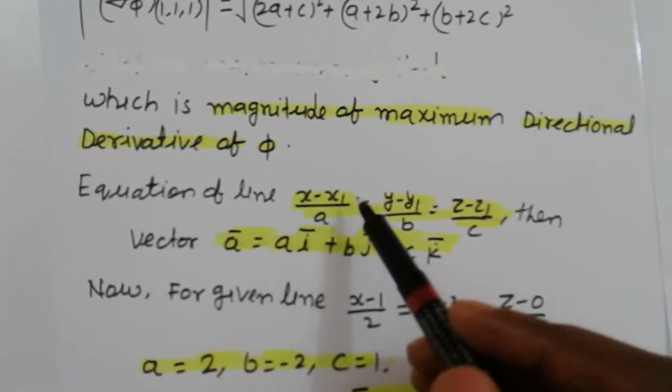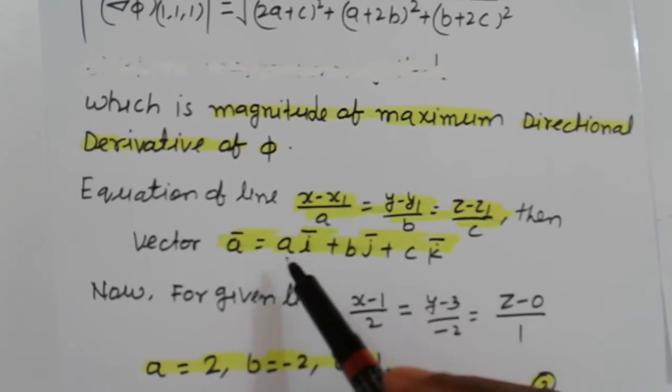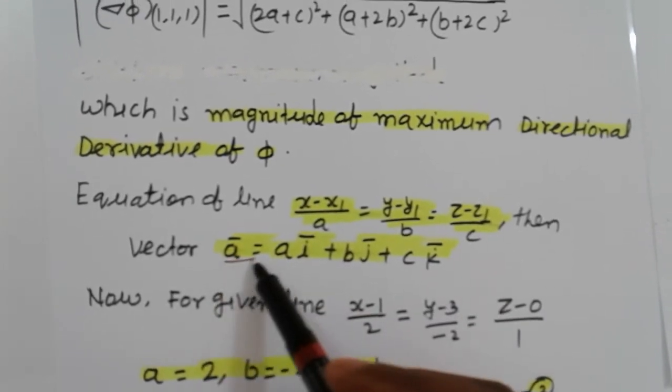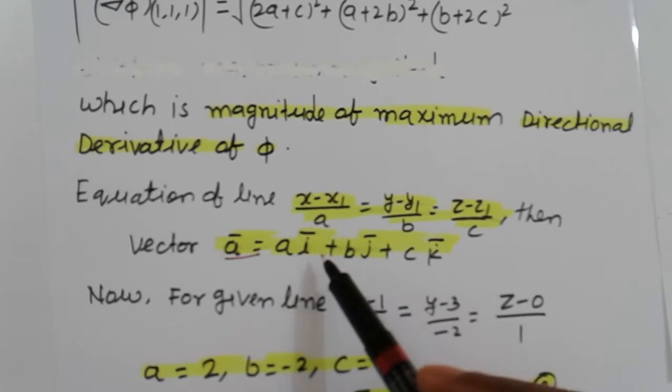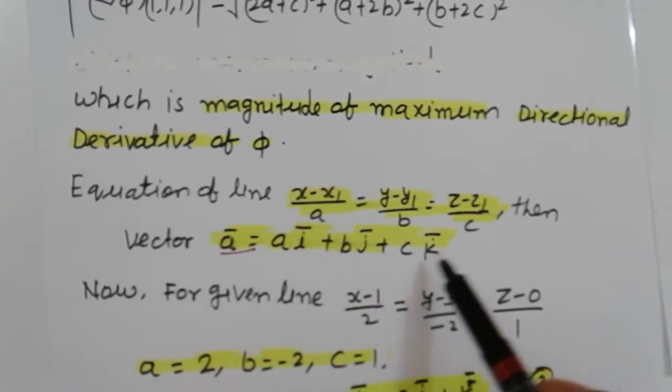The equation of line is x minus x1 upon a, y minus y1 upon b, z minus z1 upon c, then vector a equals a i plus b j plus c k.